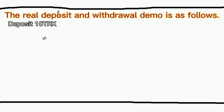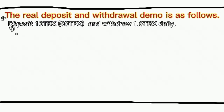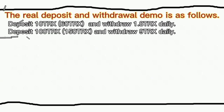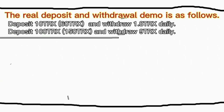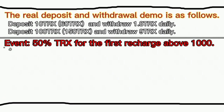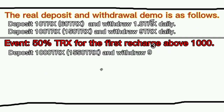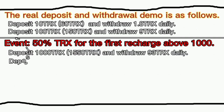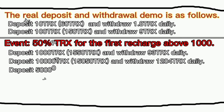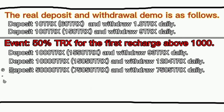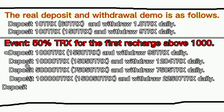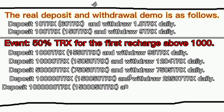The real deposit and withdrawal demo is as follows. Deposit 10 TRX, get 60 TRX, and withdraw 1.8 TRX daily. Deposit 100 TRX, get 150 TRX, and withdraw 9 TRX daily. Event: 50% TRX bonus for the first deposit above 1,000.